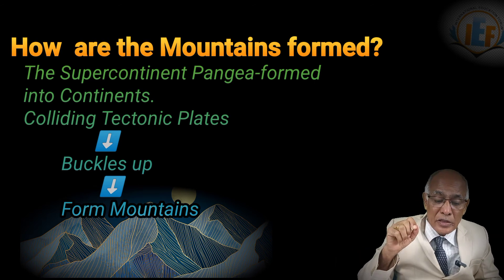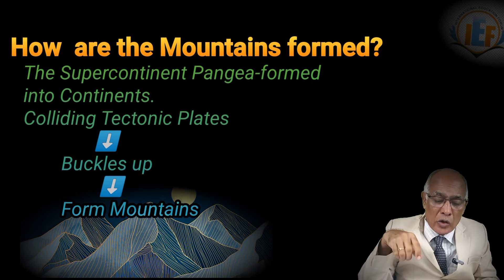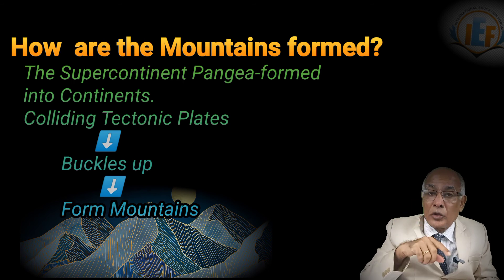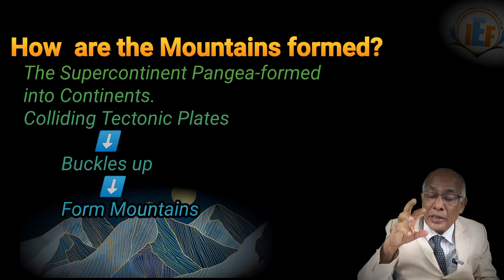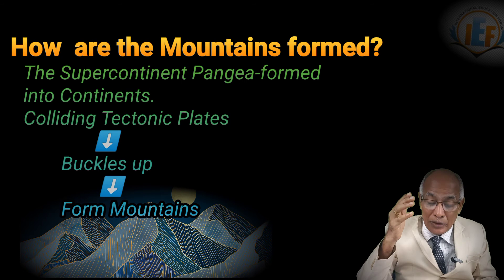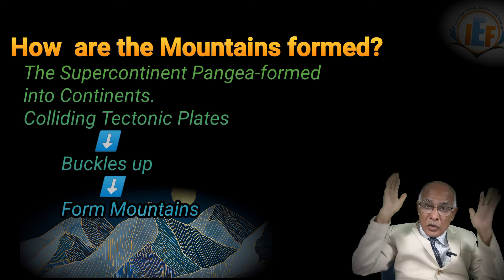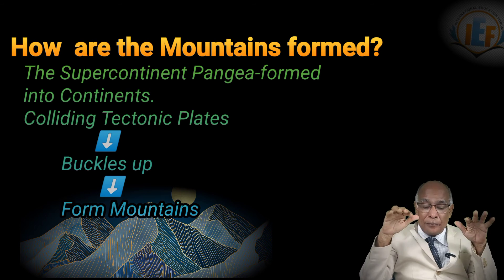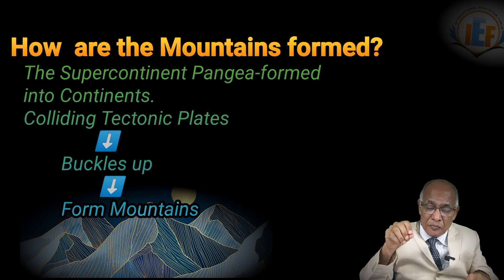The Atlas Mountains stretch across northern Africa and are 2,500 kilometers long. They cover Morocco, Algeria, Tunisia, and parts of the Sahara. The name Atlas is very interesting — it comes from the ancient Greek Titan, Atlas, who was believed to be bearing the whole earth on his head. And from that Atlas, our maps are also called Atlas maps.